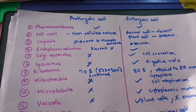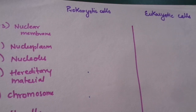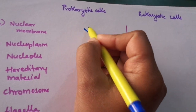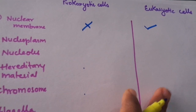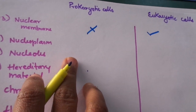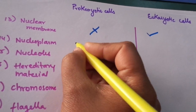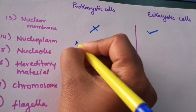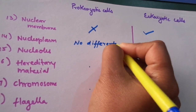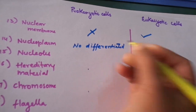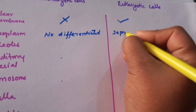Moving on to the next major differences: the nuclear membrane is absent in the case of prokaryotic cells and present in the eukaryotic cell. The nucleoplasm is present in both cases, but in prokaryotic cells it is not differentiated from the cytoplasm, whereas in eukaryotic cells the nucleoplasm is separated from the cytoplasm.